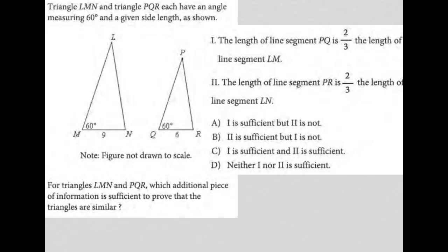So this question is a diagram question. Any question that provides some visual input, I'm going to call a diagram question. This question says triangle LMN and triangle PQR each have an angle measuring 60 degrees. We see that 60 degree angle and given side length as shown. So we have nine and we have six.